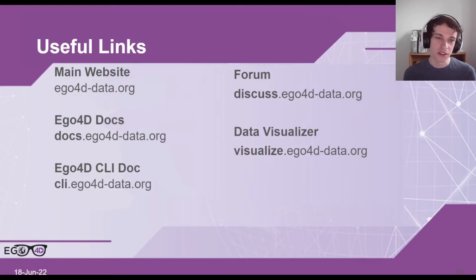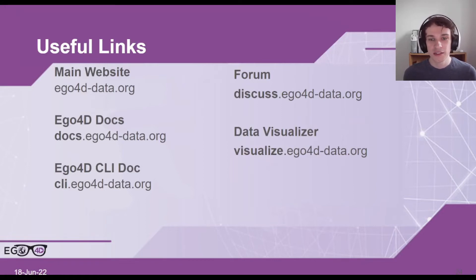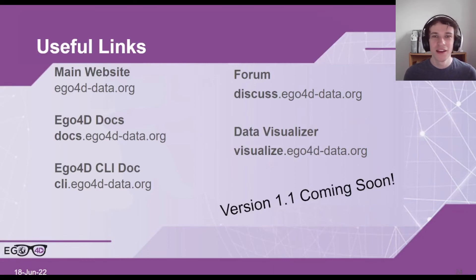Here are some useful links on the dataset. The main website is at ego4d-data.org, and you can prepend subdomains to gain access to the different types of resources. We have the docs using the docs prepend tag, the CLI documentation by adding CLI, the forum at discuss, and the data visualizer at visualize.ego4d-data.org. We also have a small update titled version 1.1, which includes some small fixes for the dataset. Thank you for watching this video, and we hope you find it useful for beginning your research into Ego4D.